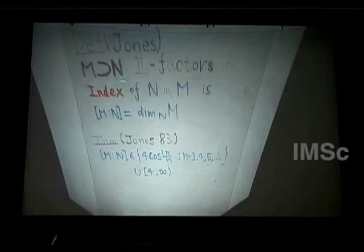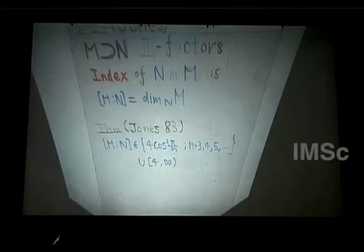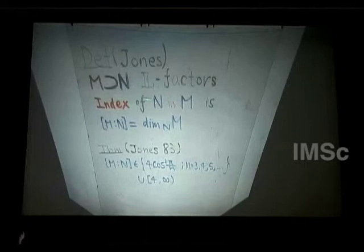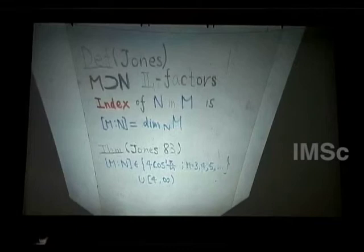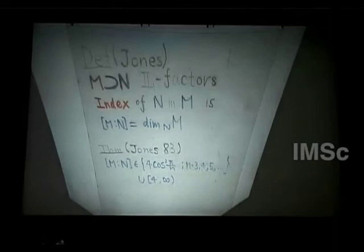We consider two II₁ factors: M is a II₁ factor, and N inside M is again a II₁ factor. Then Jones introduced a notion of index for II₁ factors. The index [M:N] is a specific number — it is, so to speak, the relative dimension of M over N.